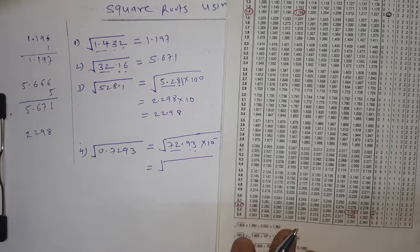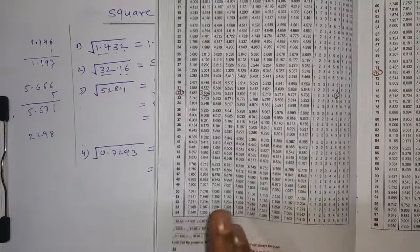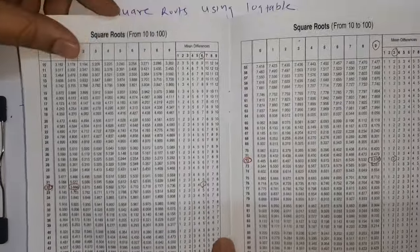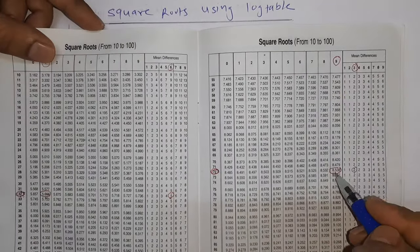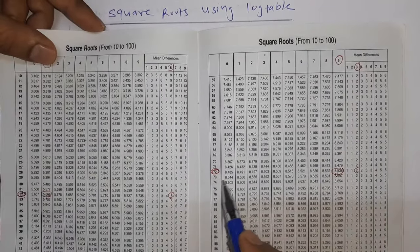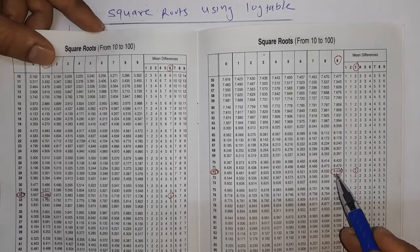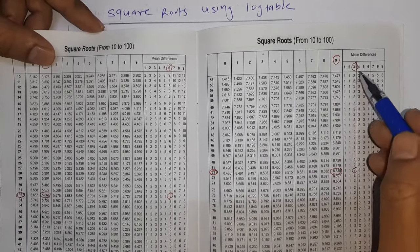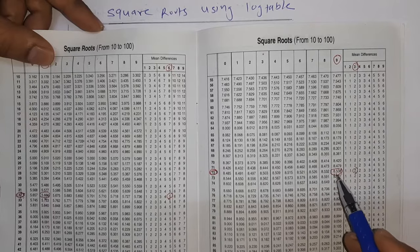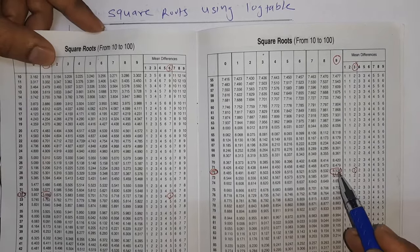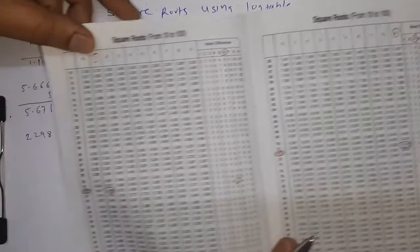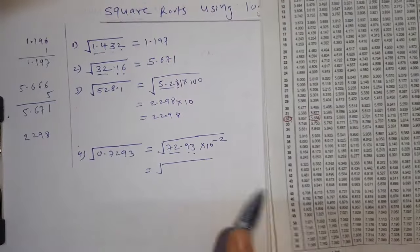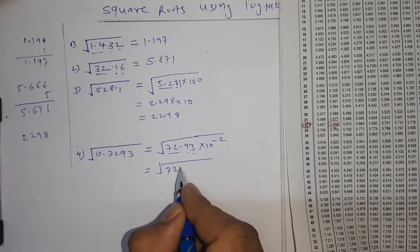72, where is it? On next page, we'll see 72. Then 9, and then 3. We have 8.538. And mean difference 3, we have 2. So 8.538 plus 2 equals 8.540.